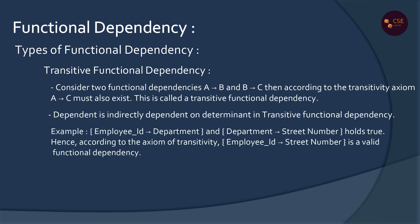Transitive Functional Dependency: A determines B and B determines C, so A determines C transitively. For example, Employee ID determines Department, and Department determines Street Number. Therefore Employee ID indirectly determines Street Number. This is Transitive Functional Dependency.